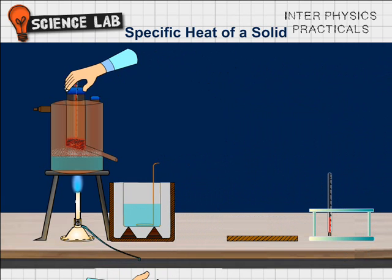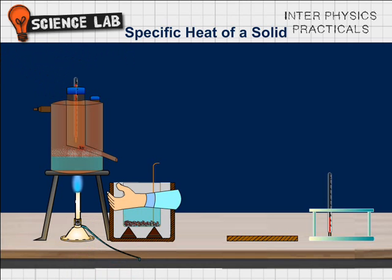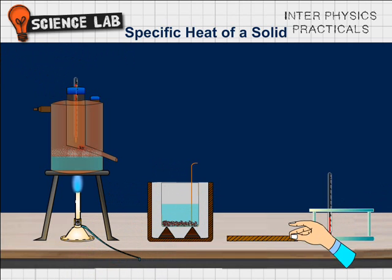Stir the contents of the calorimeter and note the resultant temperature T3. Resultant temperature T3 is 31 degree centigrade.